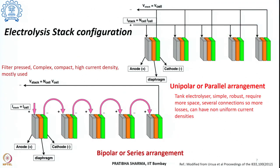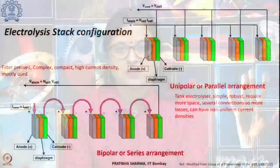Having seen the different components, thermodynamics, kinetics, and cell voltages of a single electrolytic cell, hundreds of these cells can be combined to form an electrolysis stack. There are different conformations: unipolar or parallel arrangement, and bipolar or series arrangement. A hybrid combination is also possible where some cells are in series and some in parallel, but the hybrid combination is not a preferred arrangement.